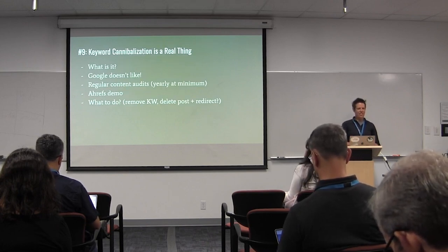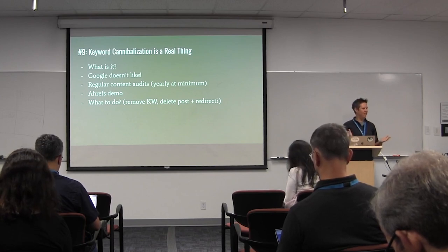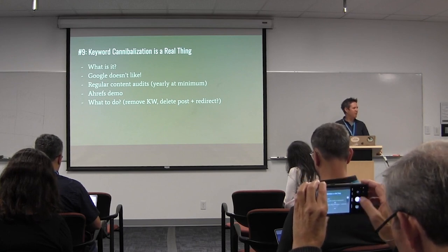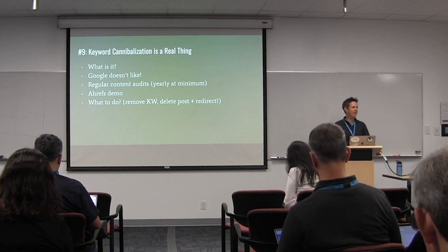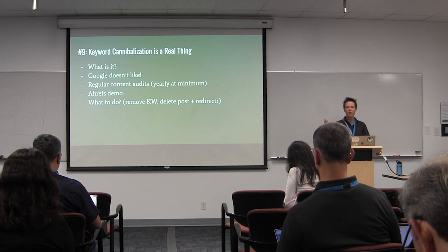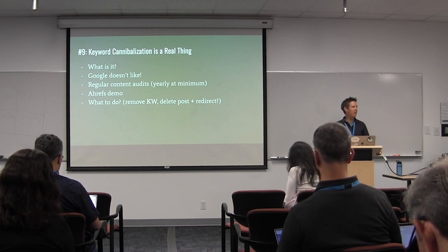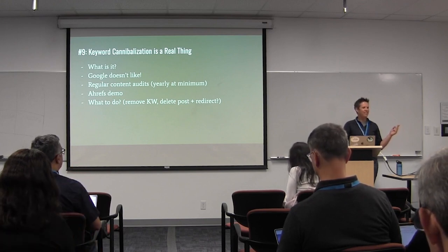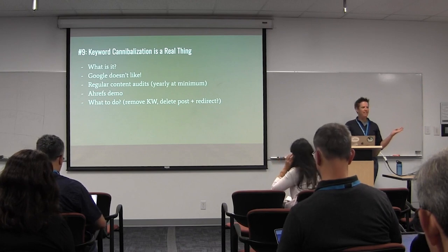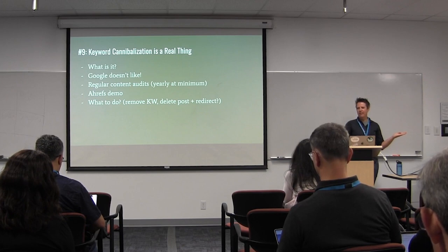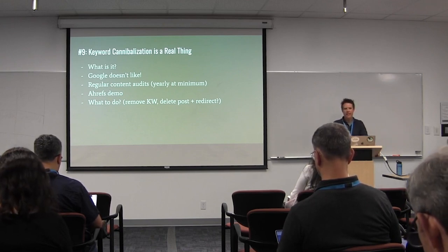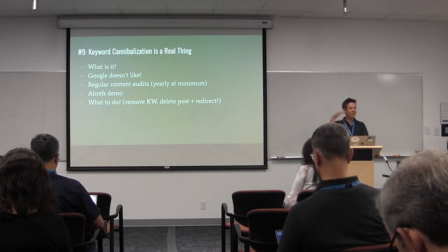Number nine: keyword cannibalization is a real thing and a big problem on a lot of websites — many people don't even know what it is. It's when you have multiple webpages ranking for the same keyword. If I have three pages ranking for the same keyword, Google doesn't like it. For example, if I have ESL grammar activities, ESL grammar activities for teens, for kids, and for adults — all four pages will rank for ESL grammar activities but none will do well because Google is confused about which page to actually rank.